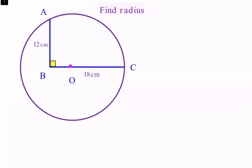In this question BC is 18 centimeters and it's passing through the center of the circle. This question will be solved by three different ways. Let's talk about the first approach.